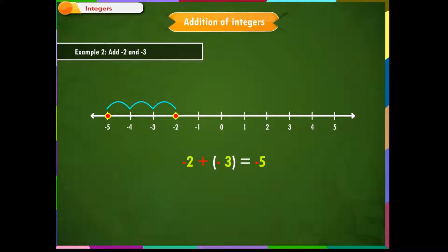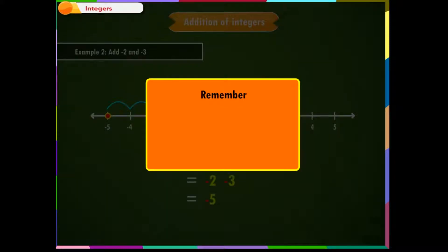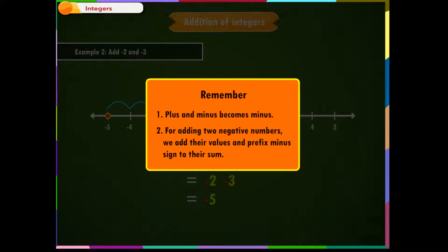We can also write this problem as minus 2 plus minus 3, which is equal to minus 2 minus 3, equal to minus 5. Remember the important points: 1. Plus and minus becomes minus. 2. For adding two negative numbers, we add their values and prefix a minus sign to their sum.